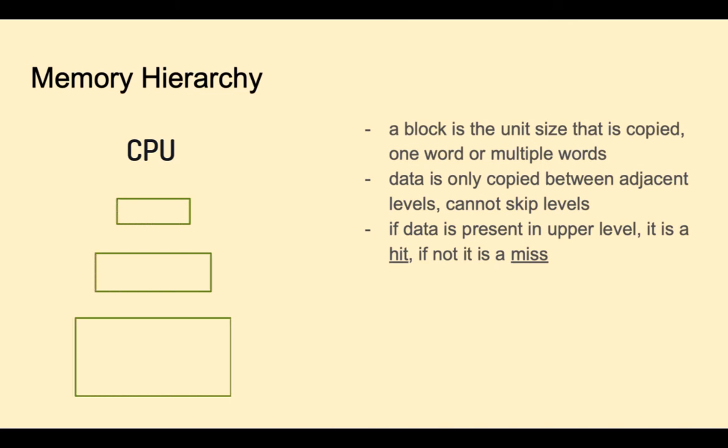Let's assume three levels of memory. A given system will have a predefined block size which is the number of words copied at a time between levels of the memory hierarchy. Data is only copied one level at a time. It doesn't skip levels. If the CPU looks for data and finds it, this is called a hit. If it doesn't find it, it's a miss. Upon a miss the system will have to look for it in lower levels of the hierarchy and copy it.